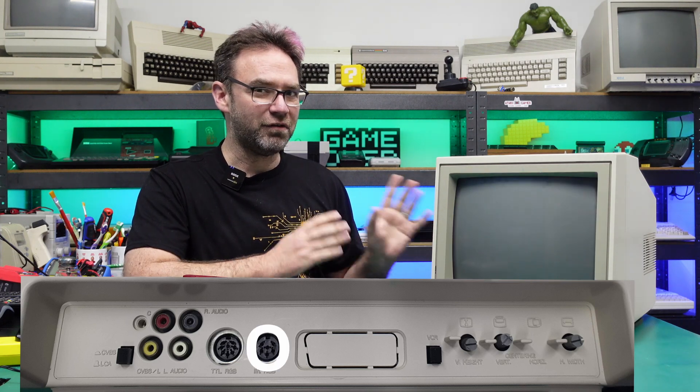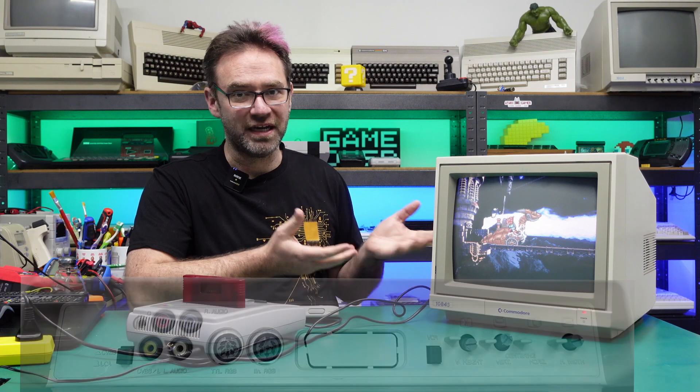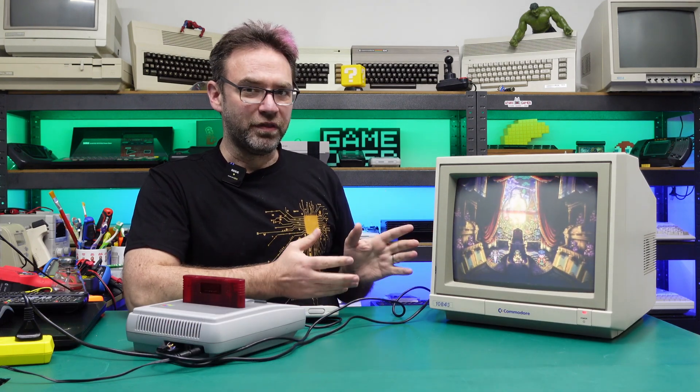Now of course the analog RGB does have the form of a DIN input and you can use that to inject analog RGB from say like a Super Nintendo here. The problem with that is that it only accepts CSYNC.